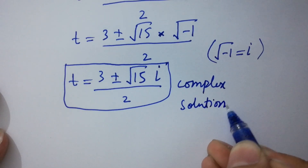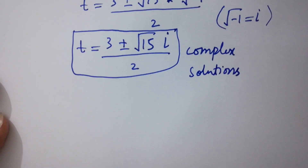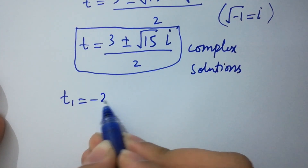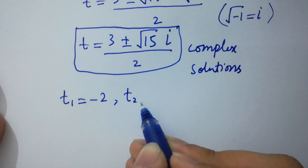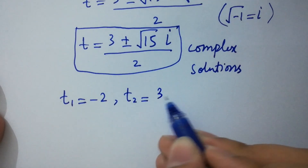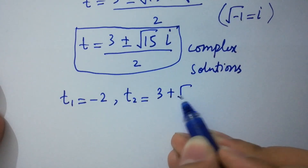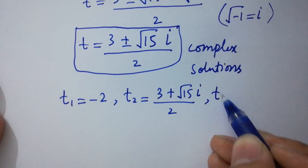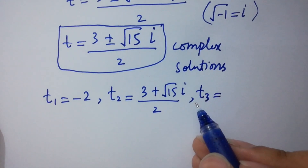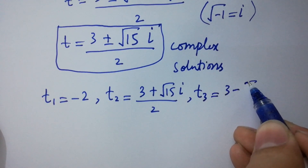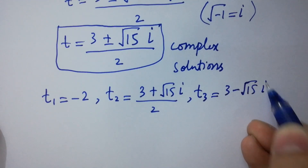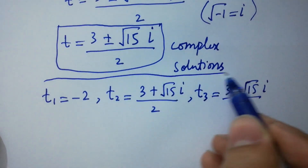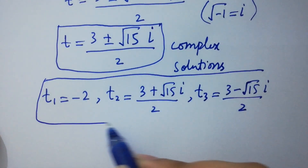So we have: t1 equals minus 2, t2 equals 3 plus square root of 15 times i, over 2, and t3 equals 3 minus square root of 15 times i, over 2. These are our values of t.